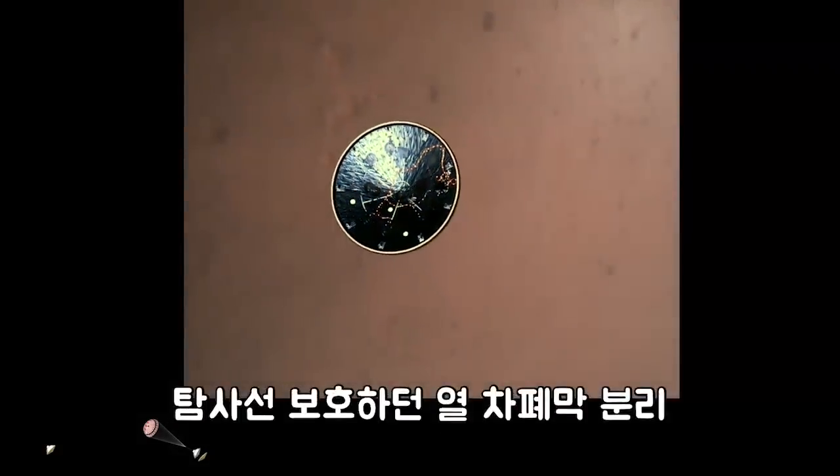Heat shield separated. Perseverance has now slowed to subsonic speeds, and the heat shield has been separated. This allows both the radar and the cameras to get their first look at the surface. Current velocity is 145 meters per second at an altitude of about nine and a half kilometers above the surface.